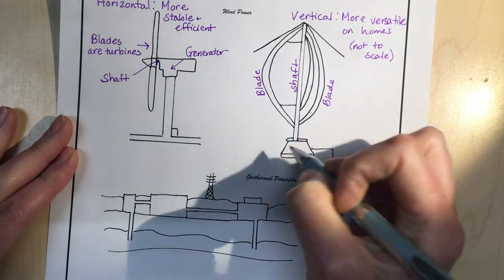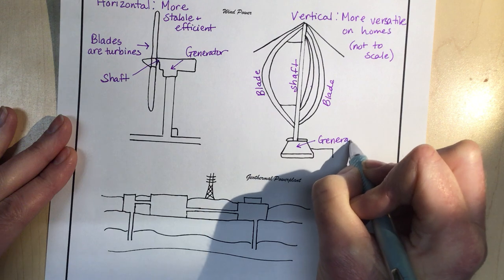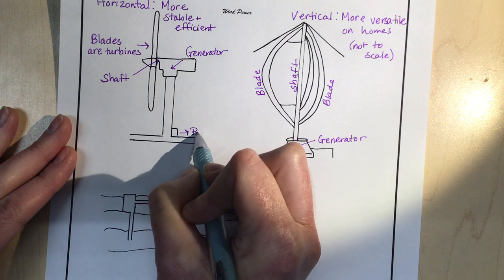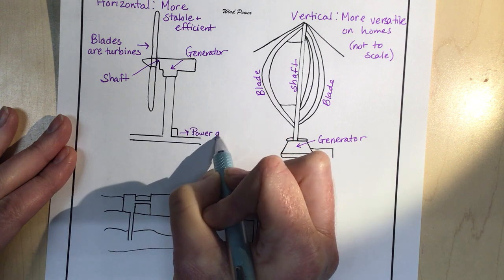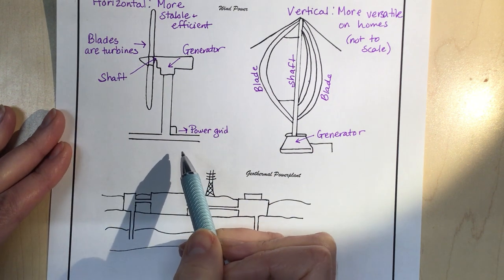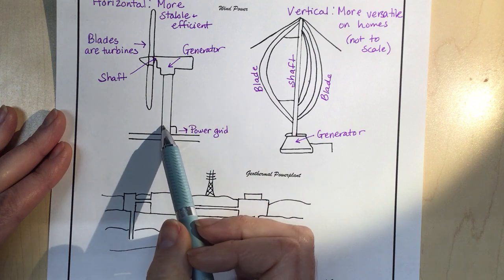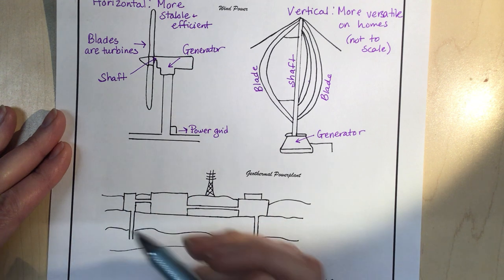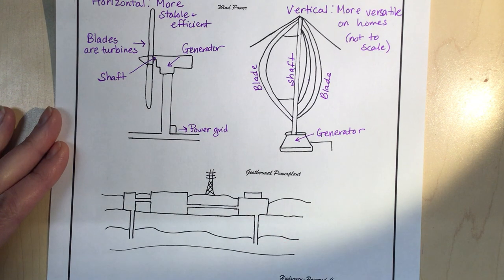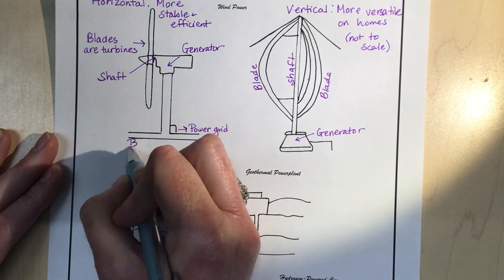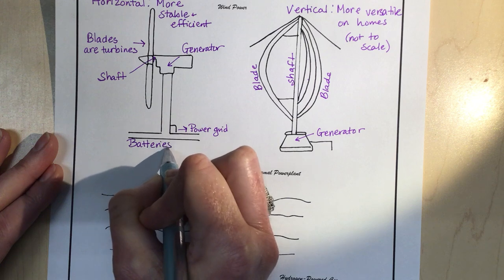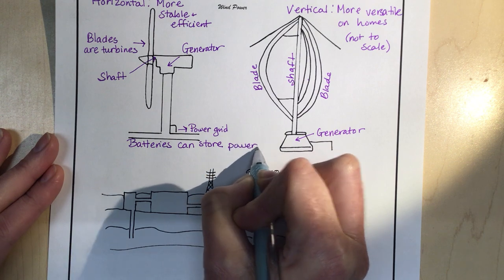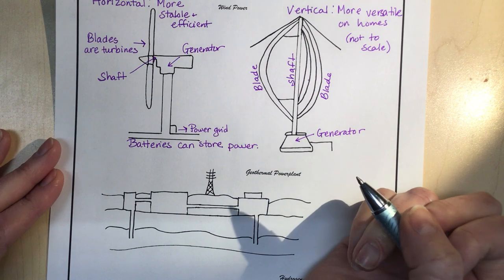This goes to a power grid, so most wind farms that use these big windmills are all connected together and they go to the power grid. On occasion you might see like one building in Europe, especially like one school powered by one of these, but most the time there's a big farm of them and they're all connected to the power grid. Wind energy can be stored in batteries when the wind's not blowing.